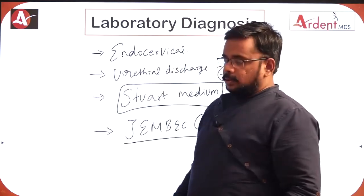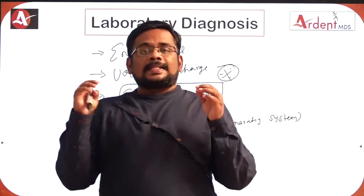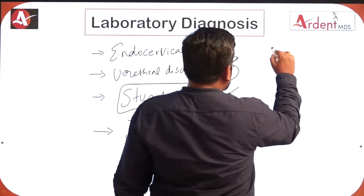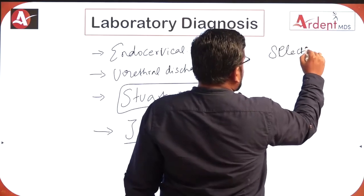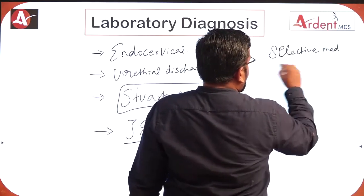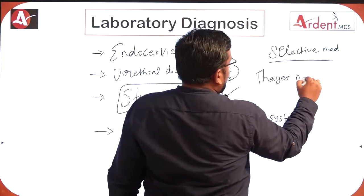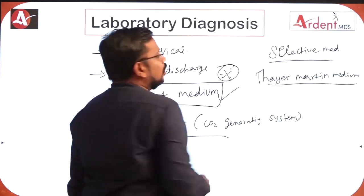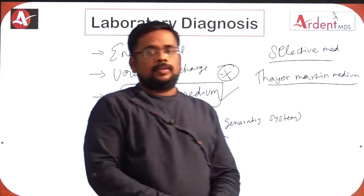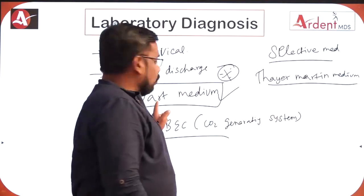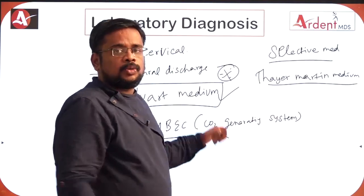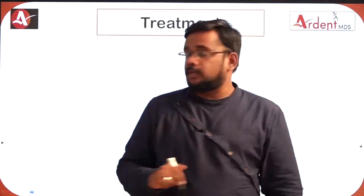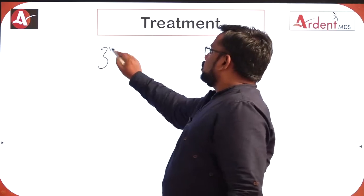The transport medium is Stuart medium. The selective medium for gonococci — an important MCQ — is Thayer-Martin medium. Chocolate agar can also be used for gonococci, but the selective medium is Thayer-Martin medium.